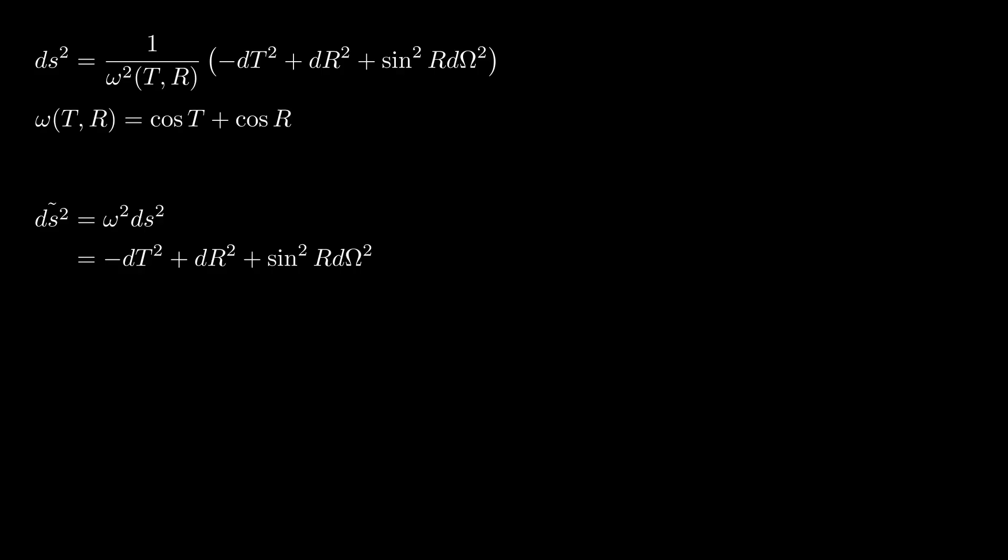Since we started with flat space, all our coordinate changes did not do anything special. But when we defined the tilde metric at the end, we multiplied out a term that is fundamentally different from a coordinate change. Multiplying by omega squared now makes it so that our tilde metric now has curvature.